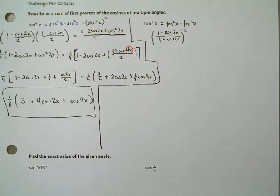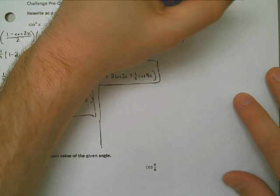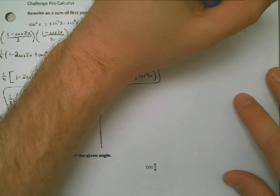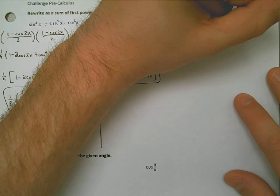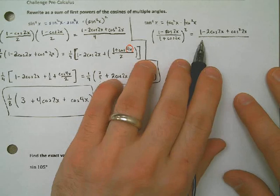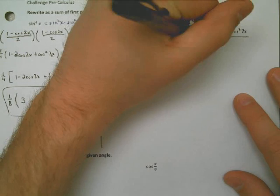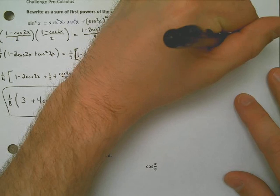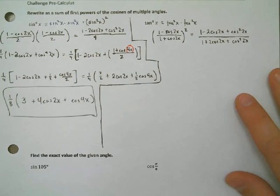Let's go ahead and FOIL this out. Sorry, there's no easy way around it. The top ends up being 1 minus 2 cosine of 2x plus the cosine squared of 2x. The bottom ends up being almost exactly the same. One difference is going to be 1 plus 2 cosine 2x. I'll leave that to you to go ahead and FOIL out, not factor, FOIL.